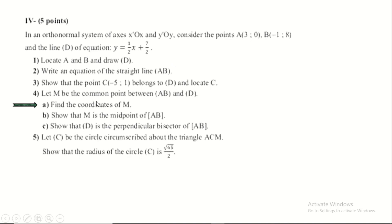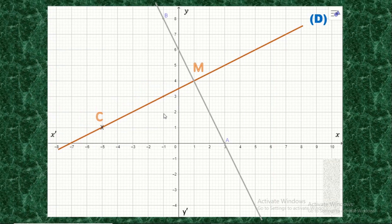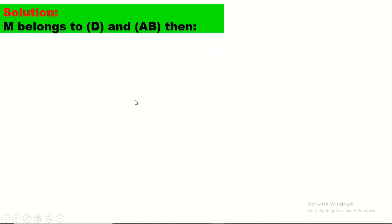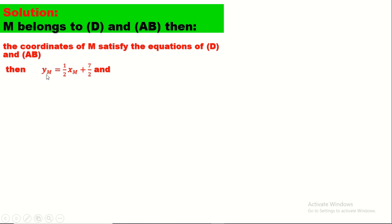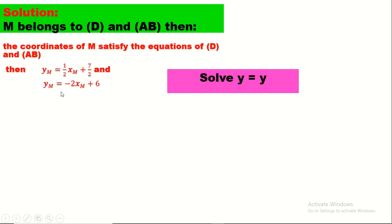Let M be the common point between lines AB and D. Find the coordinates of M. Since M lies on both AB and D, its coordinates satisfy both equations: yM = (1/2)xM + 7/2 and yM = -2xM + 6. Setting them equal: (1/2)xM + 7/2 = -2xM + 6. Multiplying through by 2: xM + 7 = -4xM + 12.